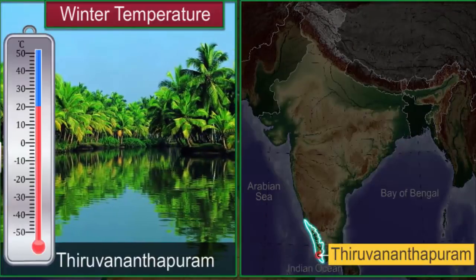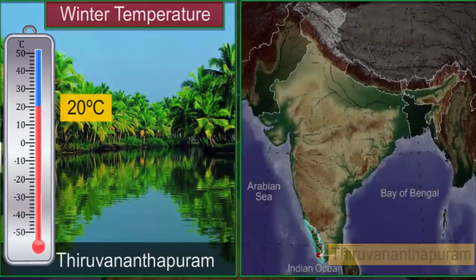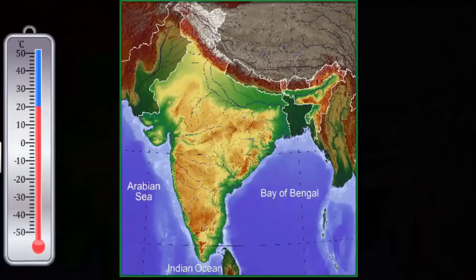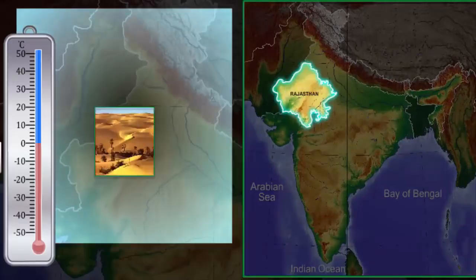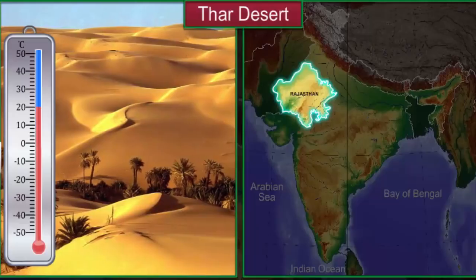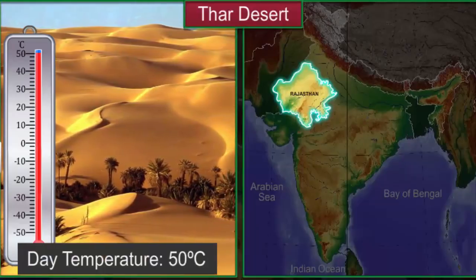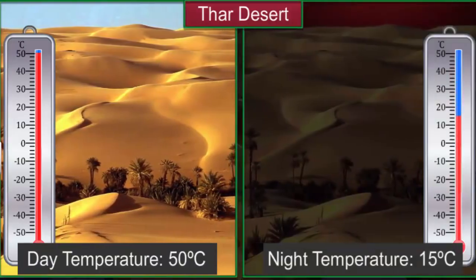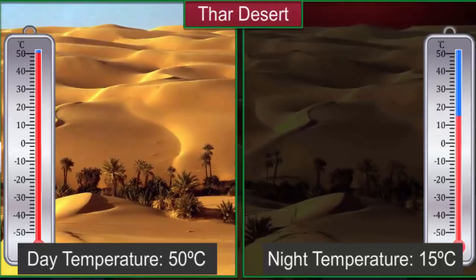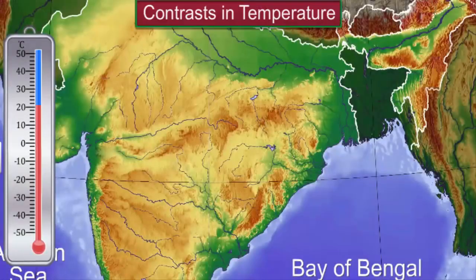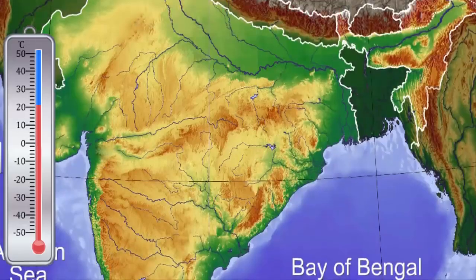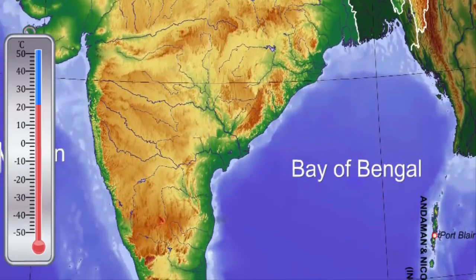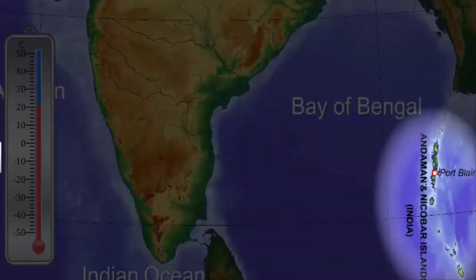Certain places experience a wide difference between day and night temperatures. For example, in the Thar desert, the day temperature may rise to 50 degrees Celsius and drop to nearly 15 degrees Celsius at night. Contrasts in temperature are experienced more in the interior of the country. On the other hand, there is hardly any difference in day and night temperatures in the Andaman and Nicobar Islands or in Kerala.